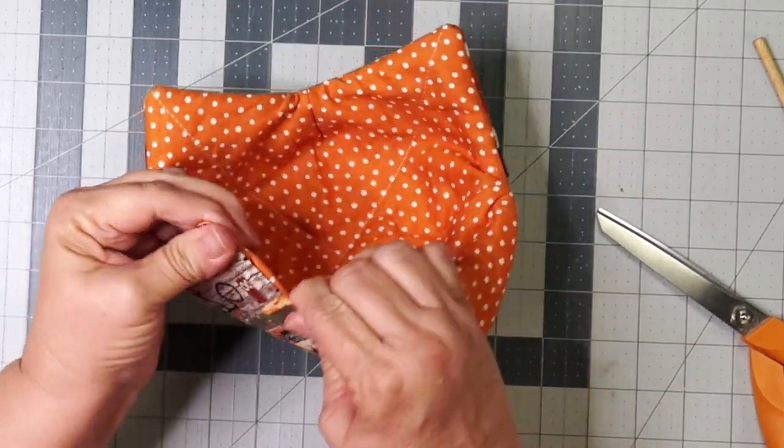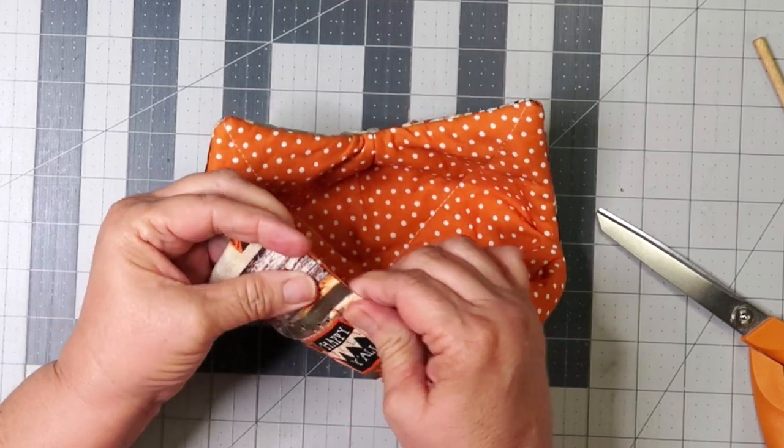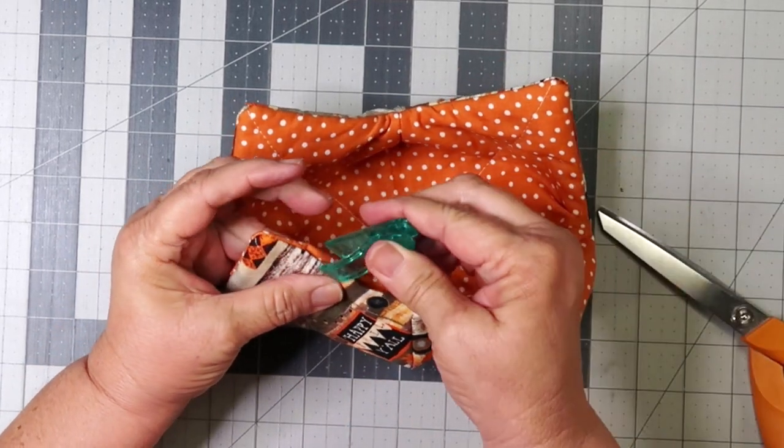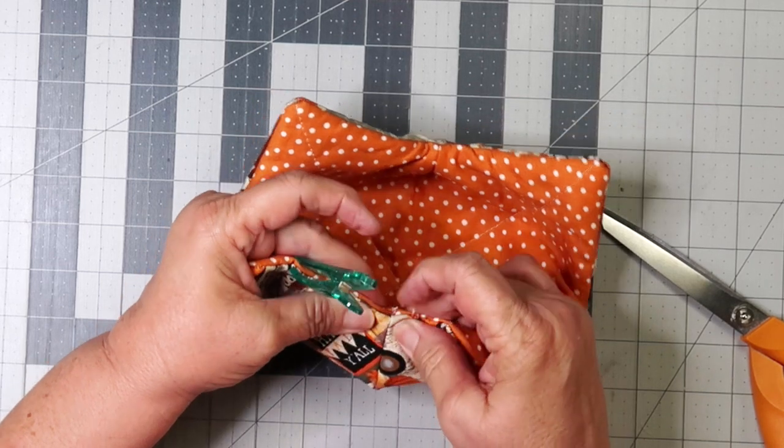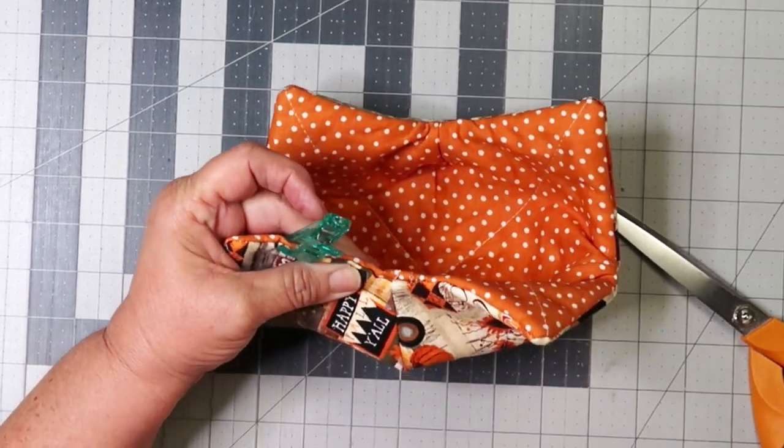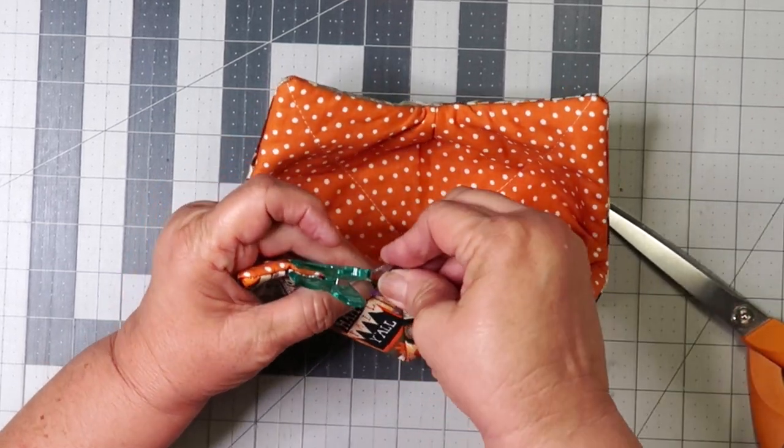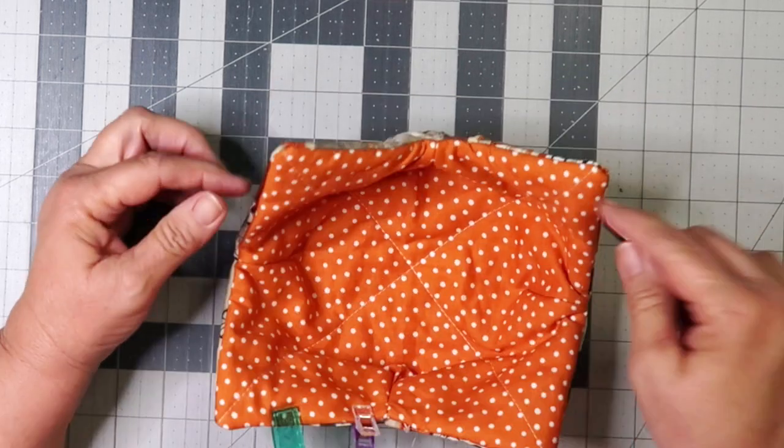And now, fold the opening fabric inside, pin or wonder clip, and sew. And I do use approximately one-eighth of an inch to a quarter of an inch all the way around.